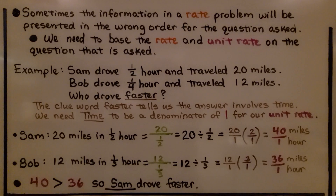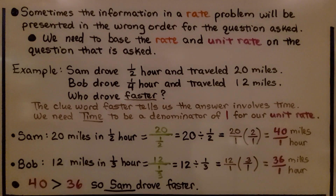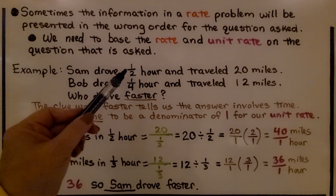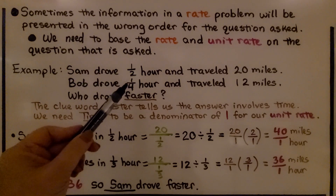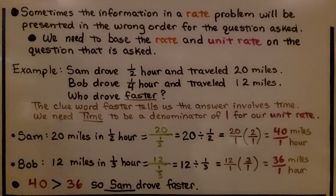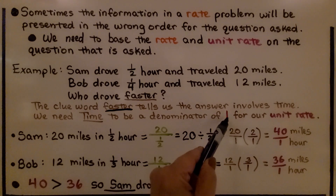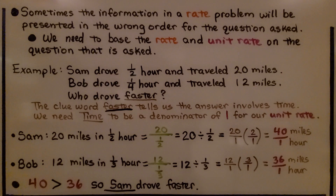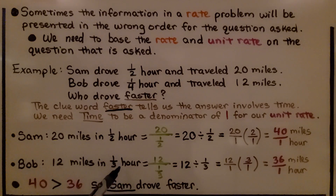Sometimes the information in a rate problem will be presented in the wrong order for the question asked. We need to base the rate and the unit rate on the question that is asked. Here's an example: Sam drove a half hour and traveled 20 miles. Bob drove 1/4 hour and traveled 12 miles. Who drove faster? The clue word 'faster' tells us the answer involves time, and we need time to be the denominator of 1 for our unit rate. We can rewrite it as Sam is 20 miles in 1/2 hour and Bob is 12 miles in 1/3 hour.